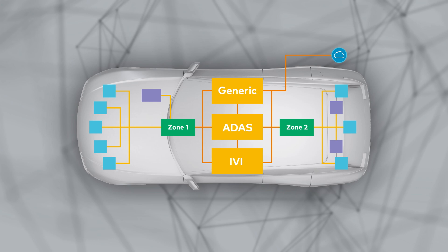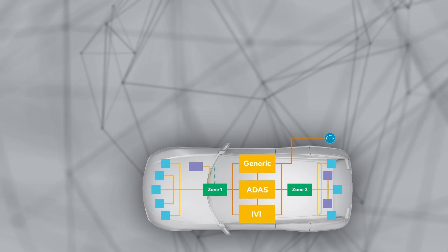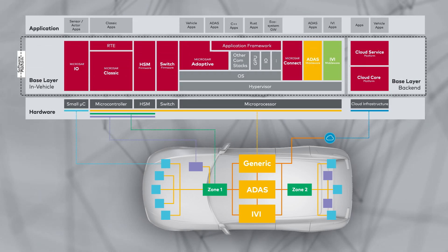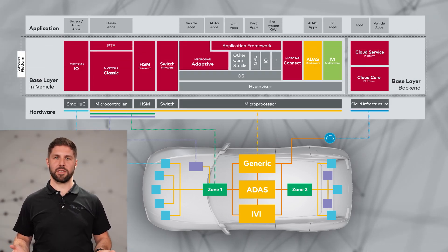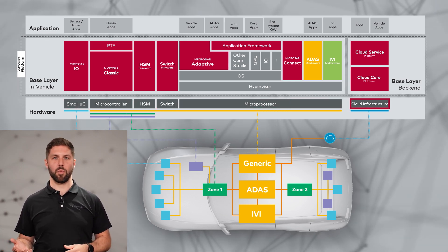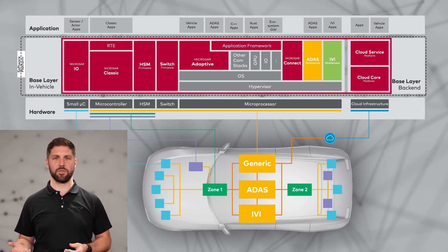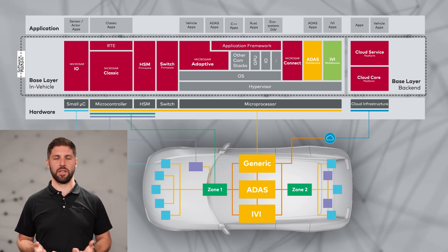So how can Vector help in such an HPC and zonal architecture? We provide the basic software as building blocks for all execution environments, in the vehicle and in the cloud. As the building blocks in the vehicle are based on different microcontroller or microprocessor architectures, we also have different building blocks fitting each use case — starting from the smallest microcontrollers up to the very powerful SOCs in the HPCs. We provide them pre-integrated in our base layer to make sure everything works together, so you can get both the technology and also the necessary services around it.